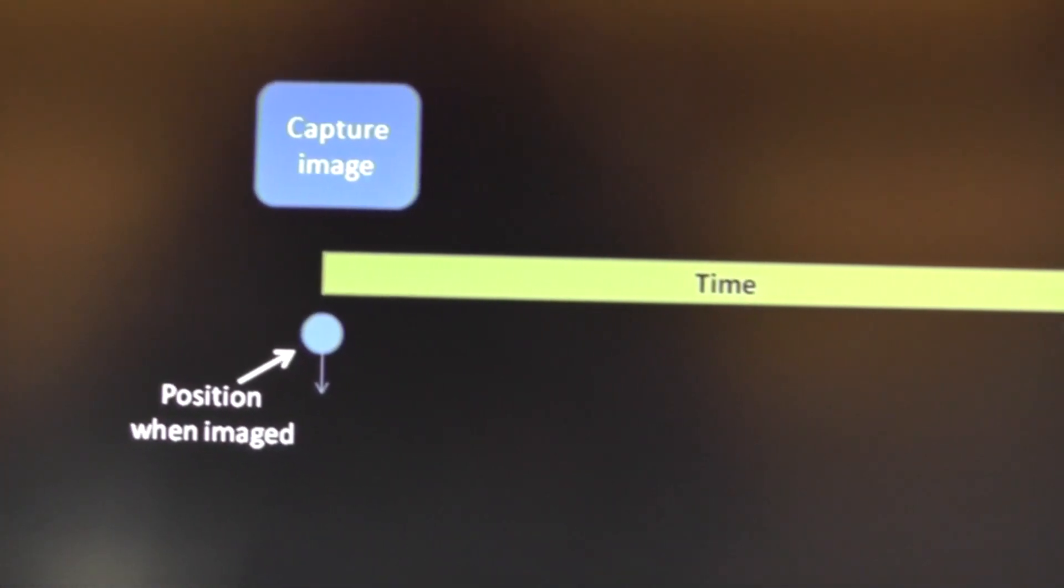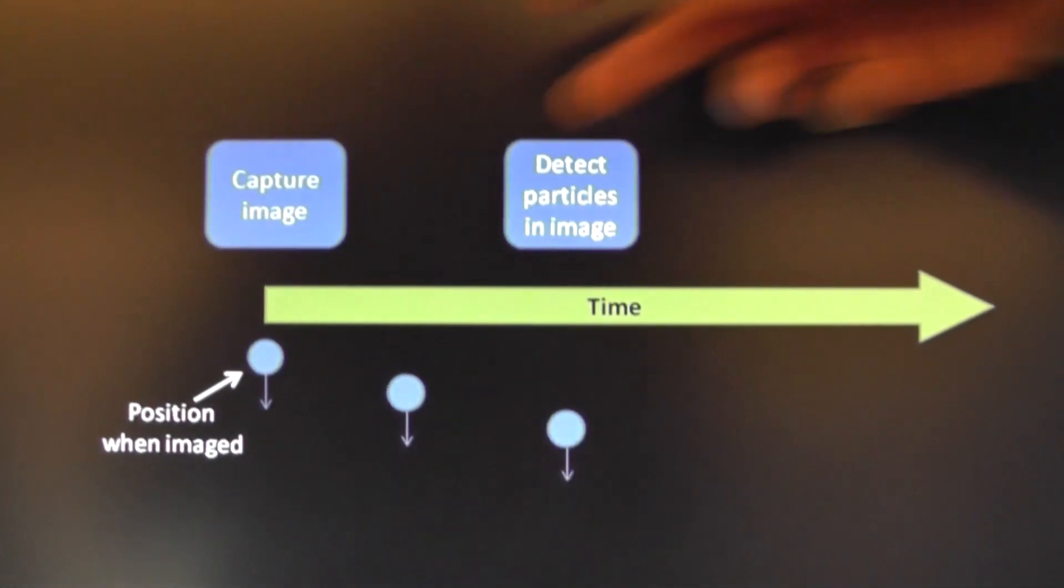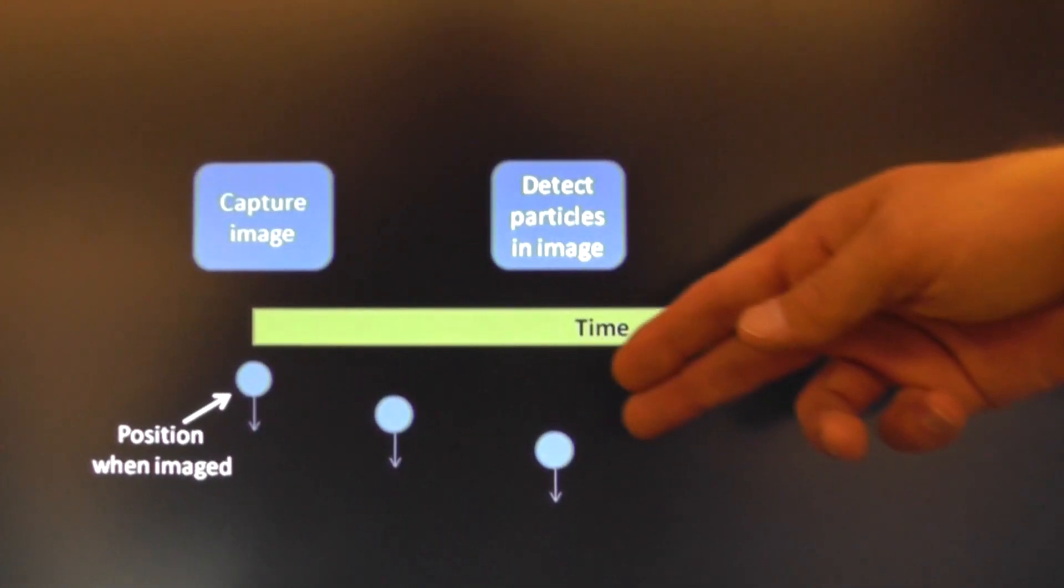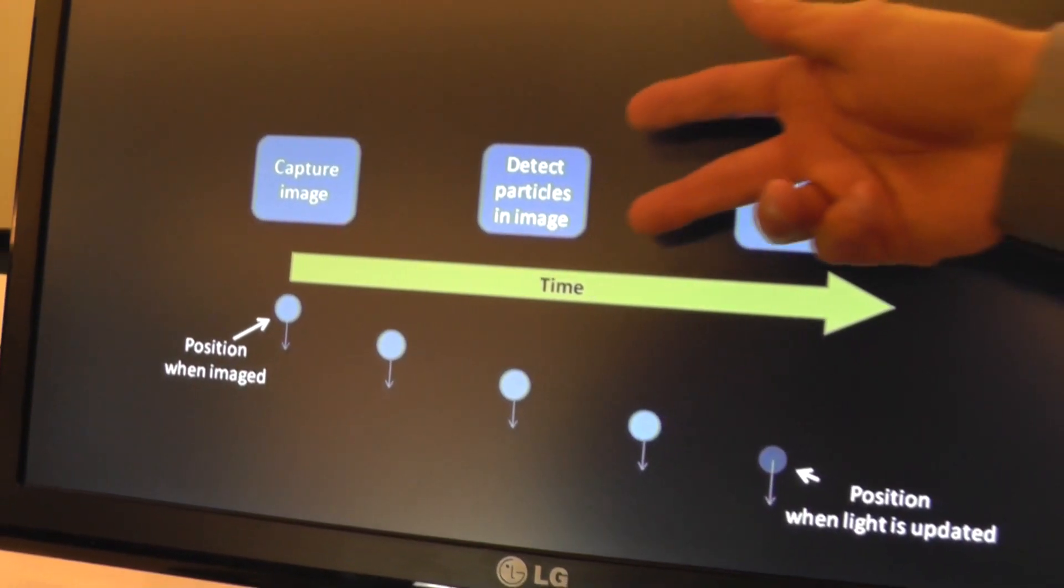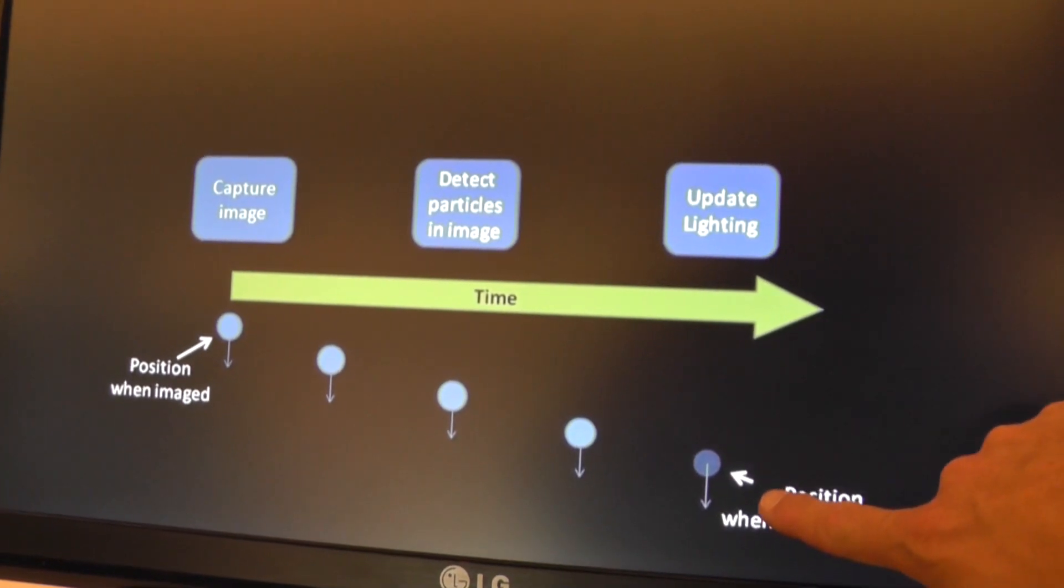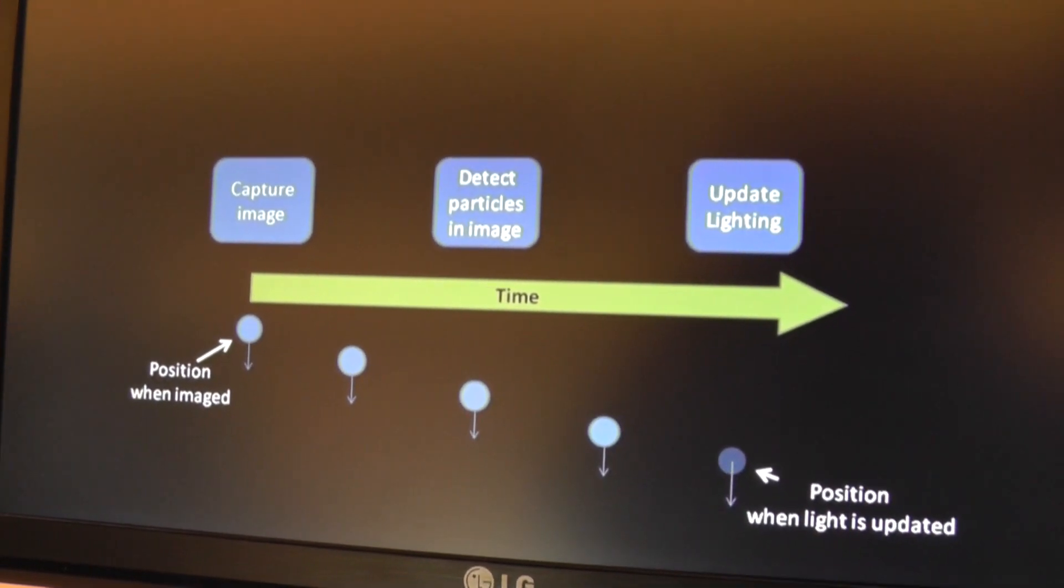Here's an overview of the process. We capture the image of the raindrop falling through the headlight. As we predict that location we're able to turn off those portions of the light.